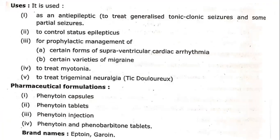The uses of phenytoin: it is used to treat epileptic seizures such as tonic-clonic seizures and some partial seizures. It is also used to control status seizures. It is used for the prophylactic management of certain supraventricular cardiac arrhythmias. It is also used for the treatment of varieties of migraines and to treat trigeminal neuralgia (tic douloureux). It comes in different formulations such as capsules, injections, and tablets.